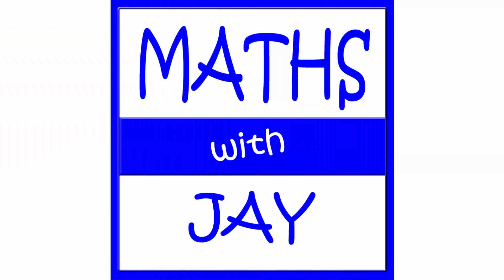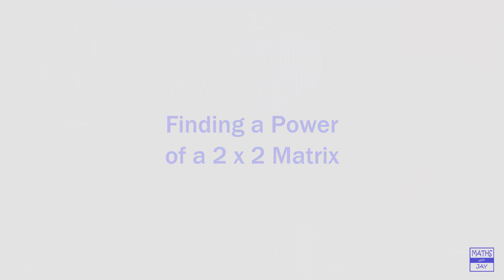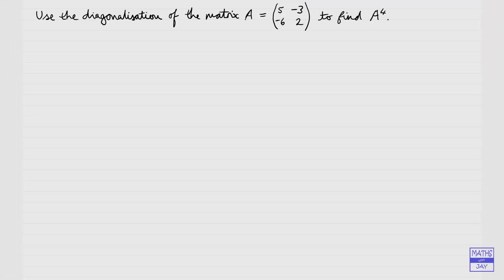Hello and welcome to Maths with Jay. What we want to do here is to use the diagonalisation of a 2x2 matrix to raise it to a power — specifically, to the power of 4 in this case.